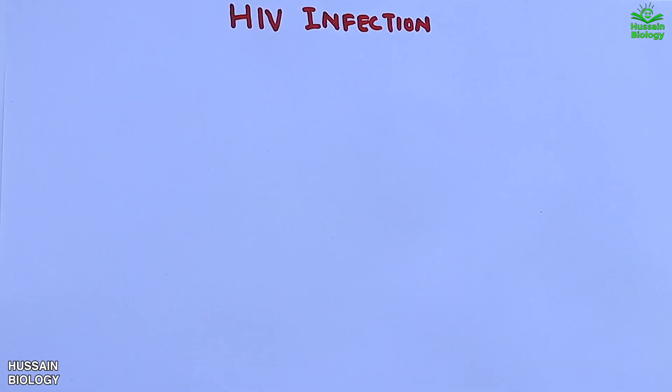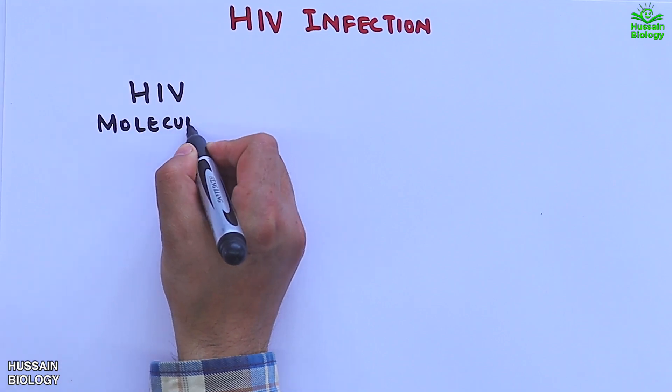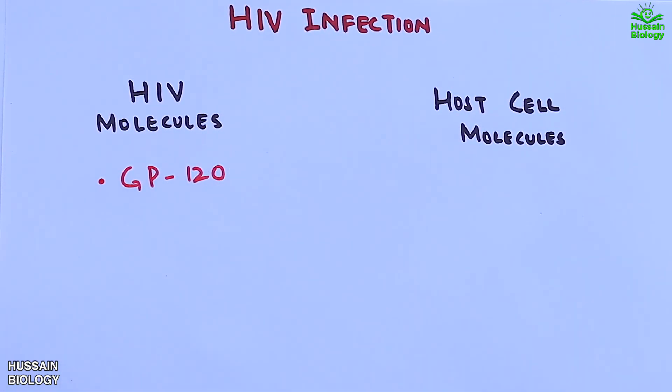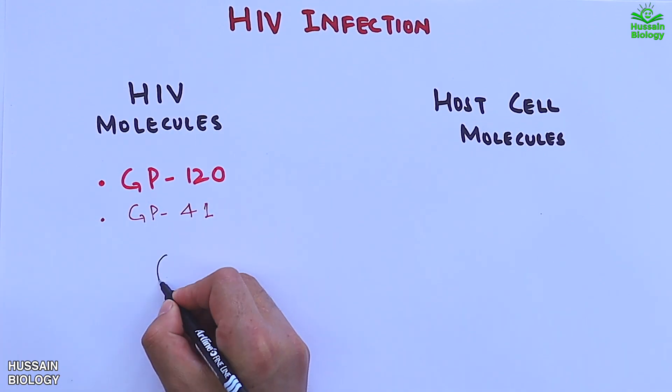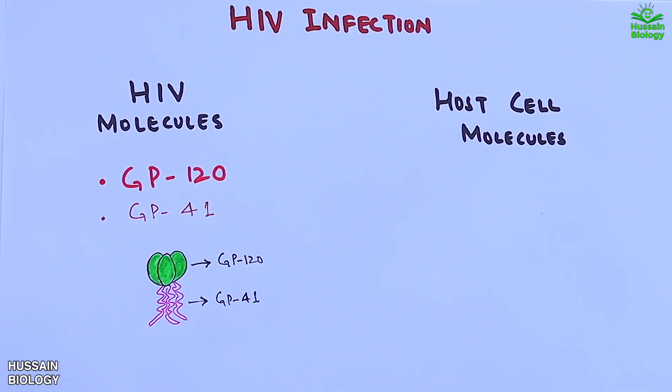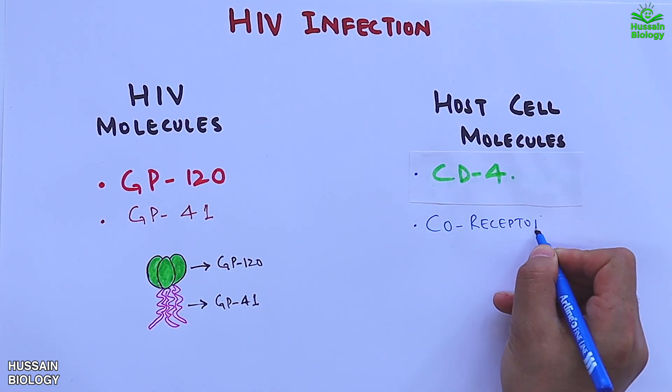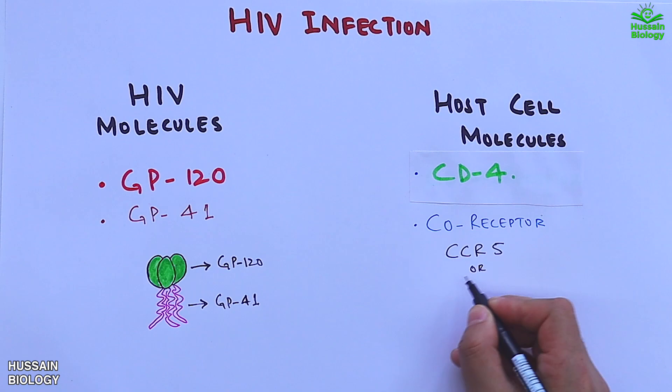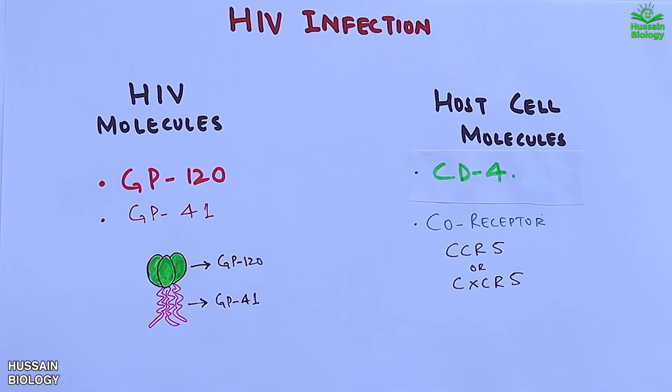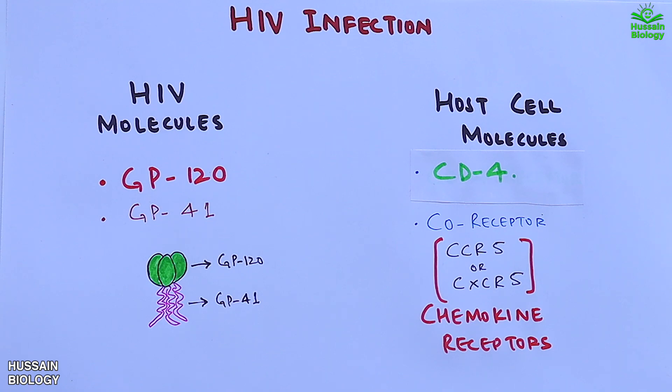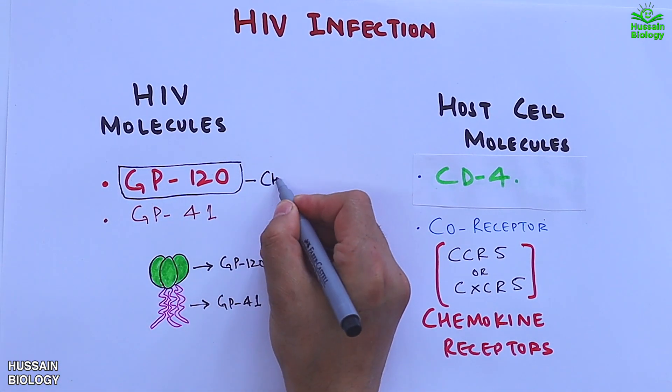Now let's see the HIV infection factors used during the process of infection. The HIV molecules include two important molecules: GP120 and GP41, both shown in the diagram. The host cell molecules include the CD4 molecule and coreceptor in the form of CCR5 or CXCR4, both chemokine receptors. The GP120 from HIV acts as a chemokine mimic.